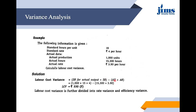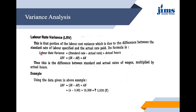We simply put the value for standard hours into the standard rate, and actual hours into the actual rate. Further, labor cost variance can be divided into labor rate variance and labor efficiency variance. Labor Rate Variance (LRV) is that portion of labor cost variance which is due to the difference between the standard rate of labor specified and the actual rate. The formula is: (Standard Rate minus Actual Rate) into Actual Hours. For the previous question, standard rate was 4, actual was 3.90, and actual hours were 15,300, giving a favorable variance of 1530 rupees.